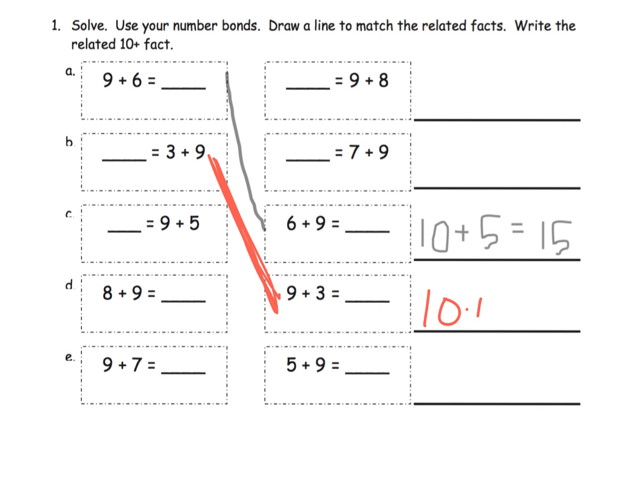We want students to see that's 10 plus 2, which is 12. Let's do 9 plus 5. 9 plus 5 is connected by the commutative property to 5 plus 9. We want students to immediately see, oh that is 10 plus 4, which is 14.